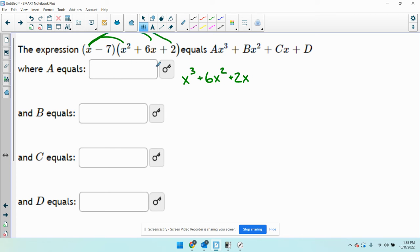Now the negative 7. Negative 7 times x squared is negative 7x squared. Negative 7 times 6x is negative 42x. Negative 7 times 2 is negative 14. Combined like terms, I get x cubed all by itself. 6x squared and negative 7x squared is going to combine to give me negative 1x squared. 2x and negative 42x is going to combine to give me negative 40x minus 14.